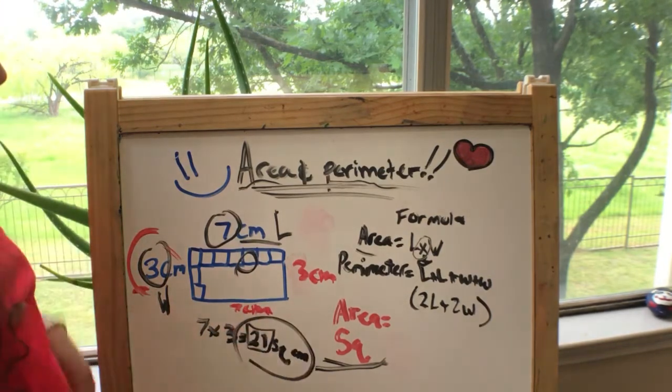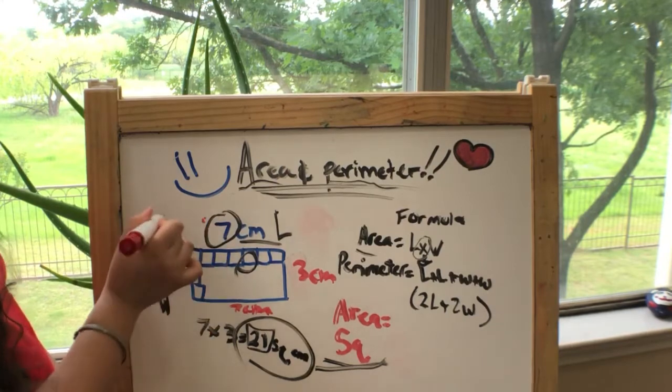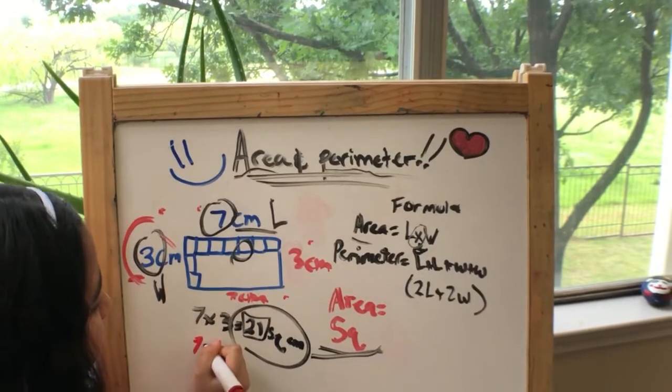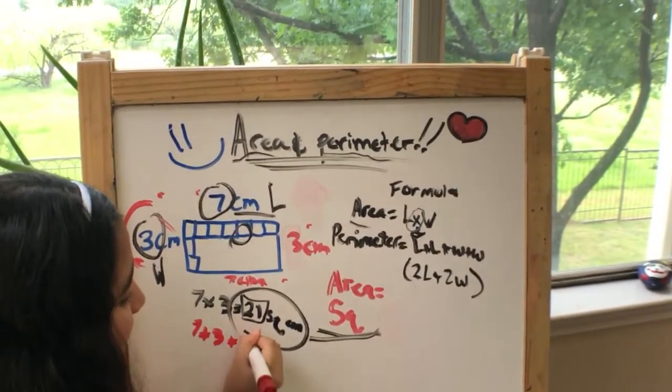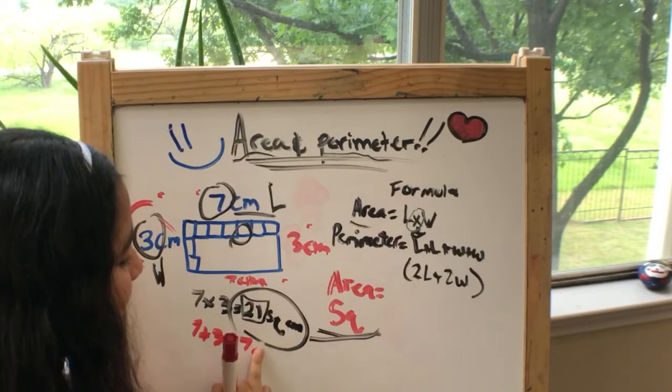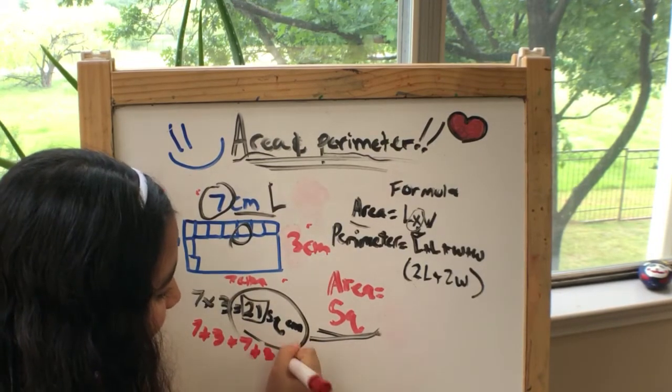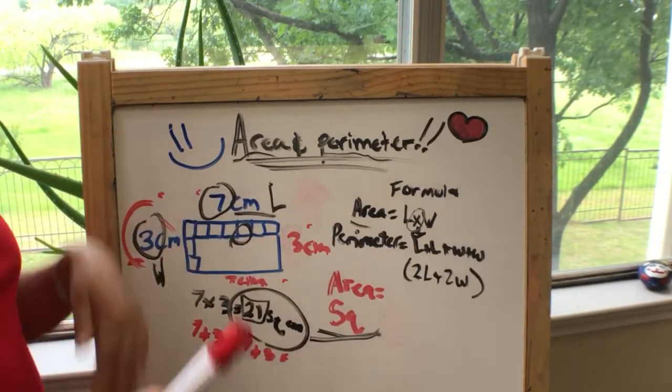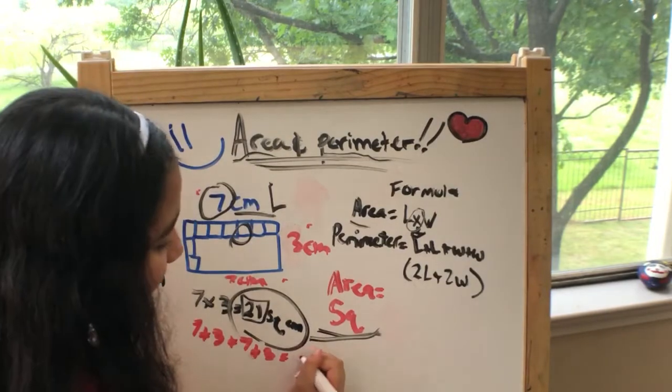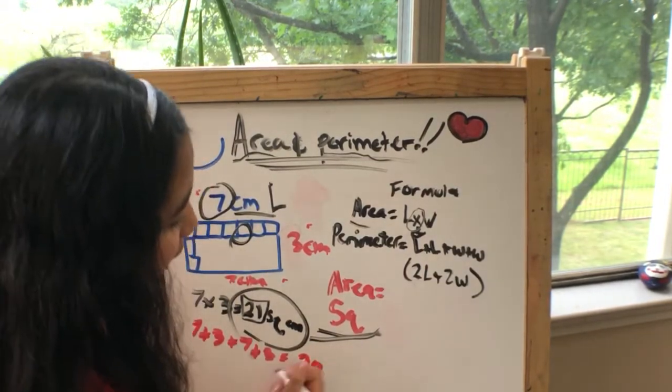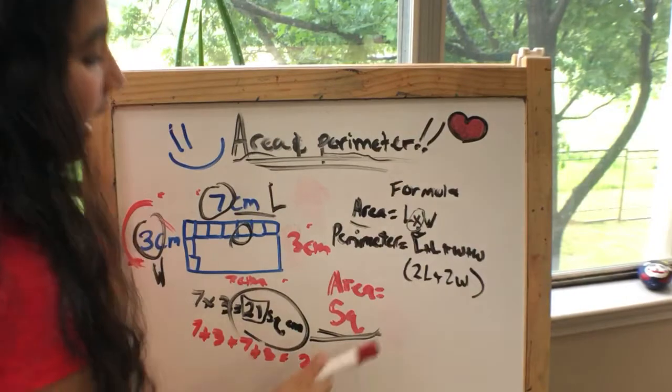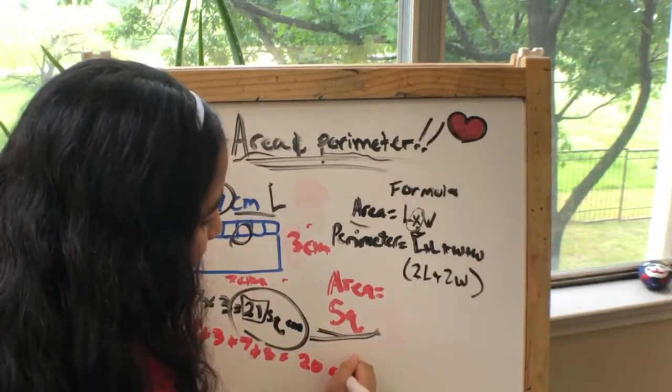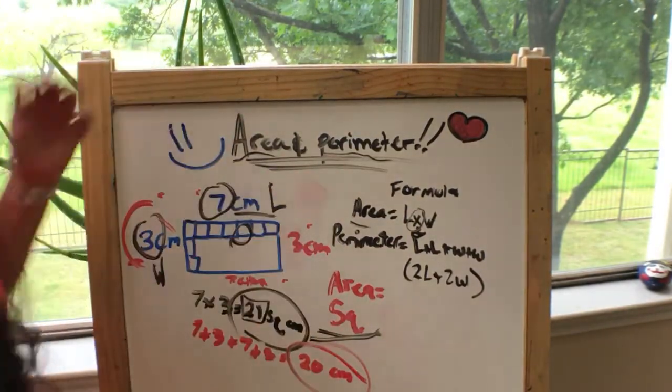Now we can add it all together: seven plus three plus three plus seven. Seven plus three already equals ten, another seven plus three equals ten. So ten plus ten equals twenty. That's our perimeter. But this time, since perimeter doesn't involve square units and stuff, we could just put cm for centimeters.